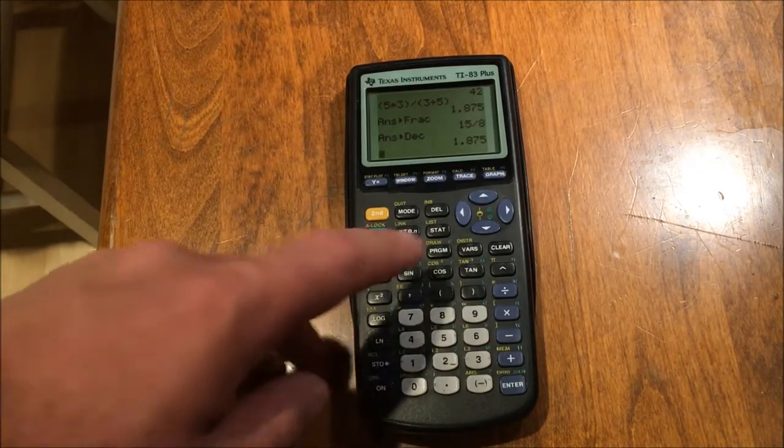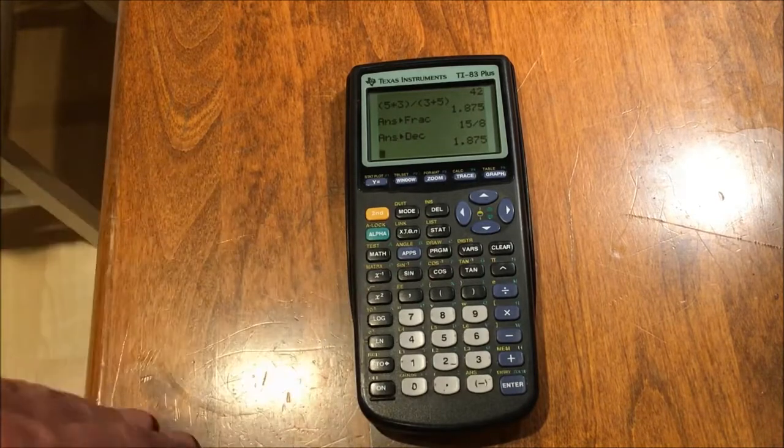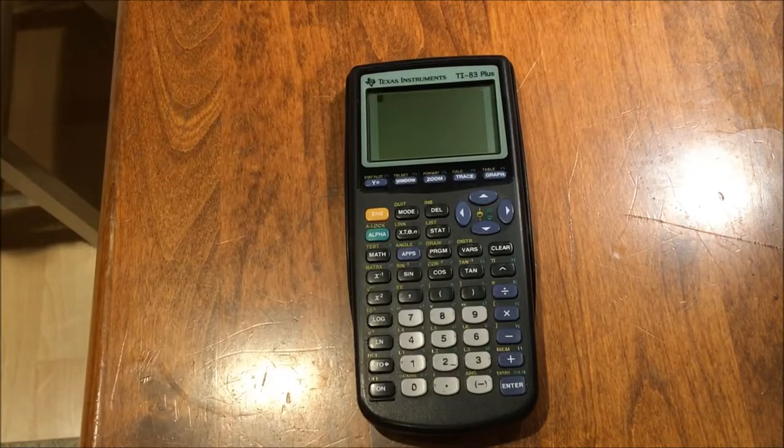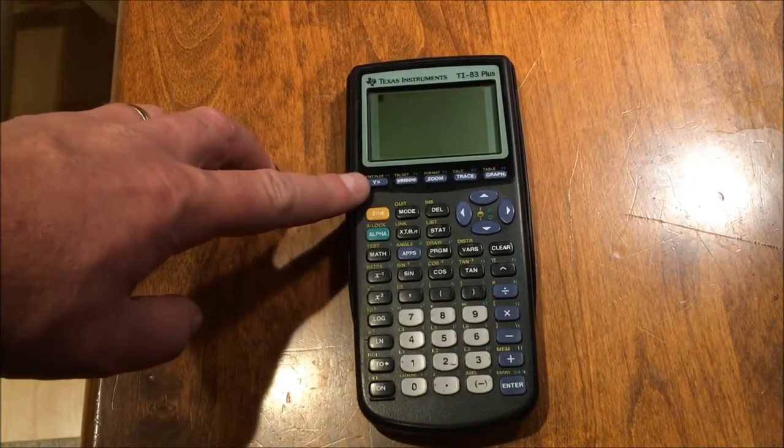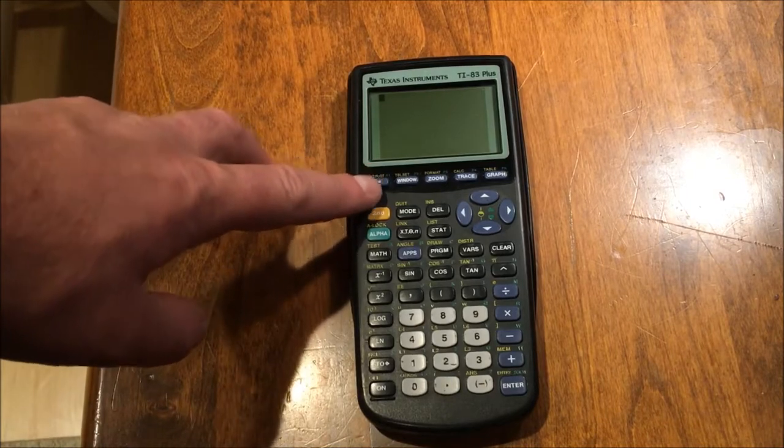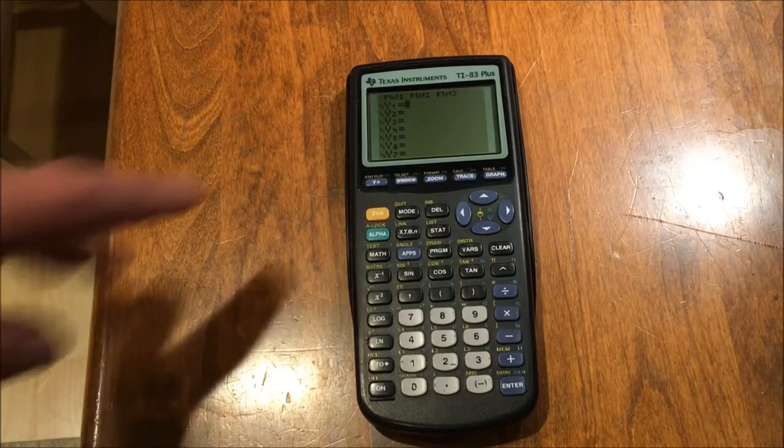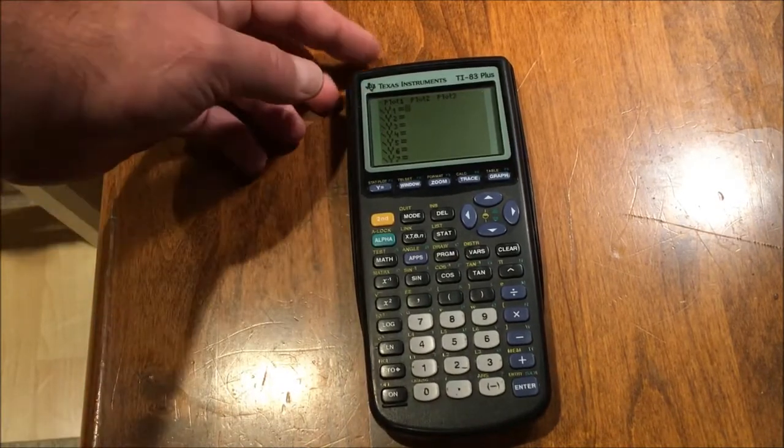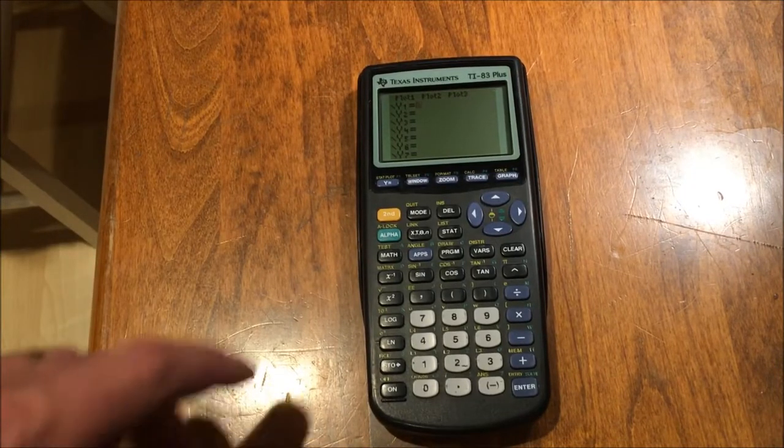So let me show you how the graphing works. If you need to clear all your entries, you press clear, and the screen depopulates. Now, y equals, this button here, is how we access the graphs. These will be single variable graphs with the output solved for. So like y1 could be f of x, your function. Now, we're going to plug in a very simple function. This button here is your variable button.